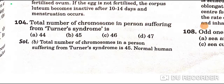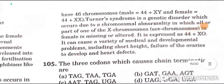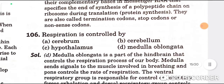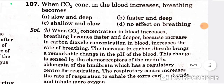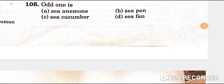Corpus luteum produces progesterone — C is the correct option. The total number of chromosomes in a person suffering from Turner's syndrome is 45 — B is the correct option. The three codons that cause chain termination are UAG, UGA, and UAA — D is the correct option. Respiration is controlled by the medulla oblongata — D is the correct option. When CO2 concentration in the blood increases, breathing becomes faster and deeper — B is the correct option.